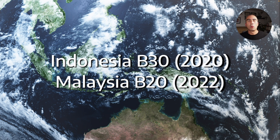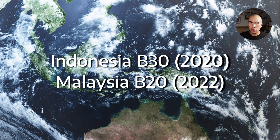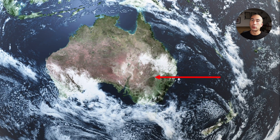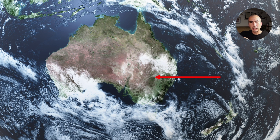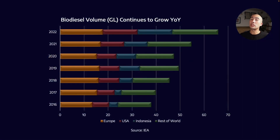In Australia it varies by jurisdiction — in New South Wales, the rule is that 2% of the volume sold by fuel distributors needs to be biodiesel, and it varies state by state. The same goes for the US, where mandates vary by state. The fundamental underpinning trend is that the volume of biodiesel continues to increase year on year, growing its market share as people look for renewable fuel sources.